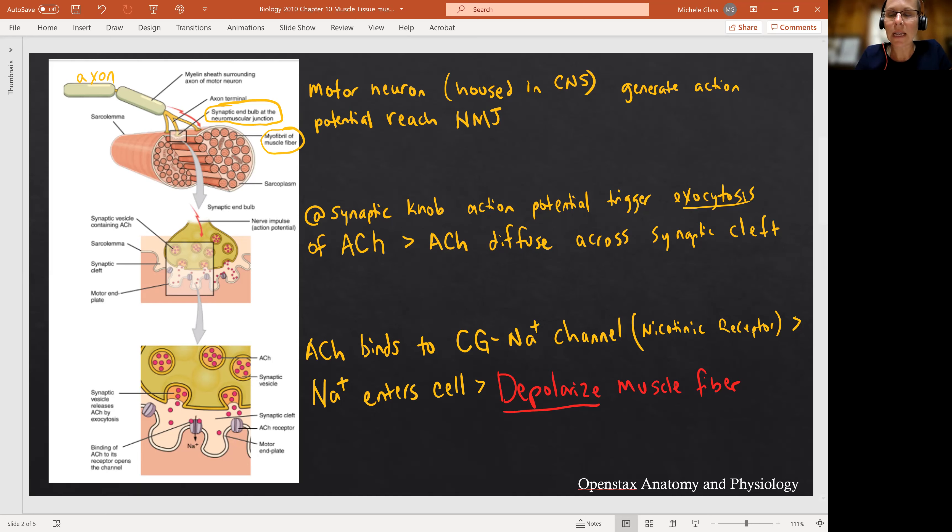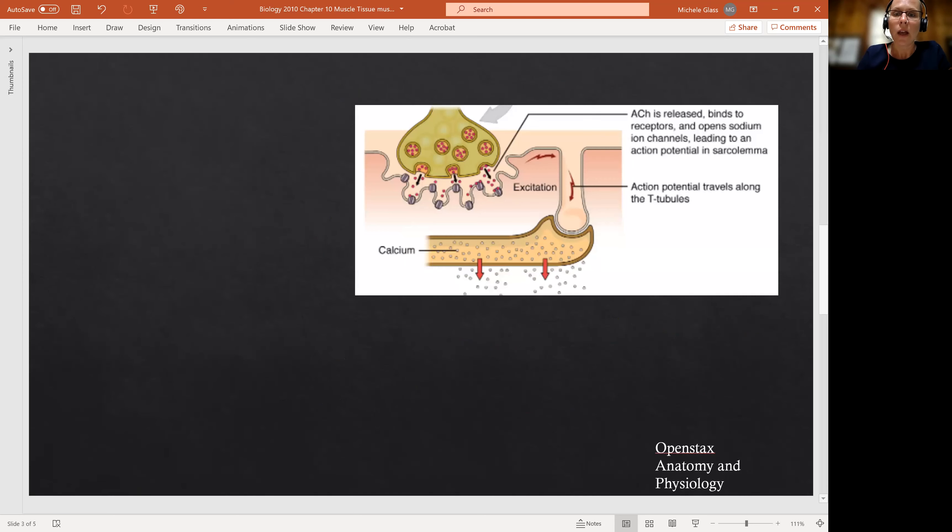Any kind of signaling, any kind of electricity is the movement of ions. So when those sodium ions move in, that's the electricity that we talk about when we're talking about nerve impulse or excitability.